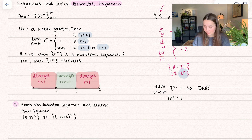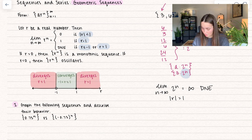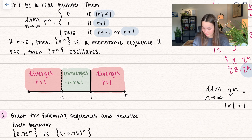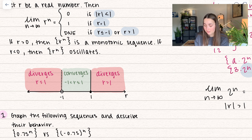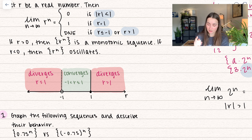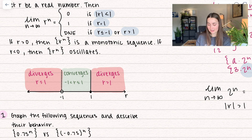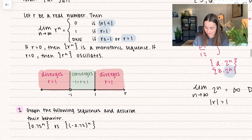Here we have a nice visual to go along with it. I've shown the area where it converges, which is when the ratio is between negative 1 and 1. Notice it can equal 1, and we'll talk about that later. Otherwise, in any other area, it's going to diverge.